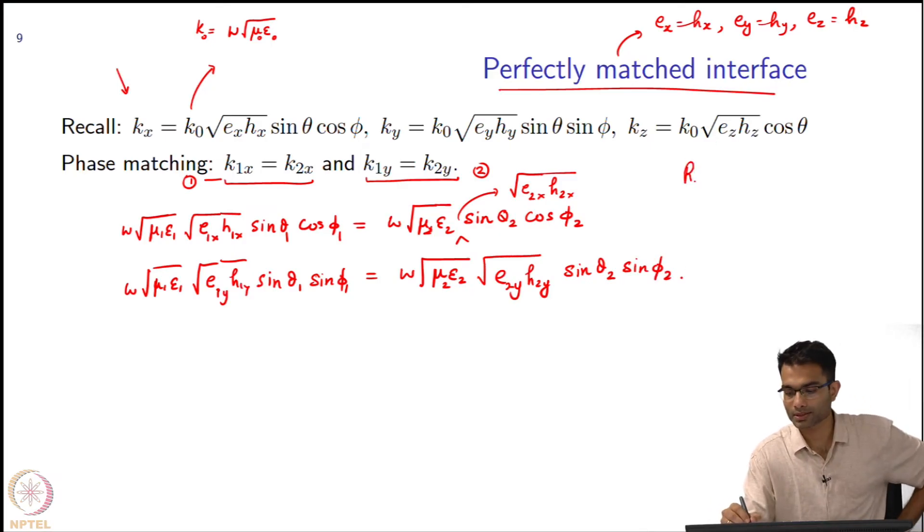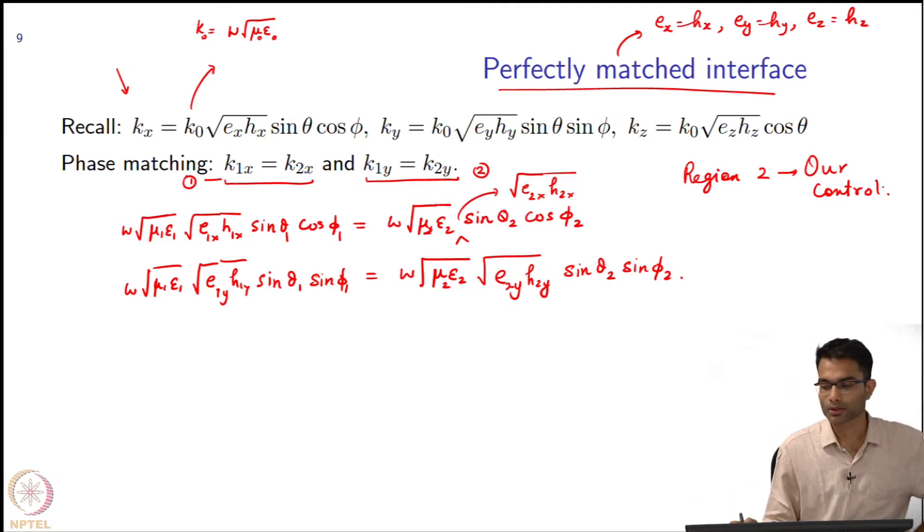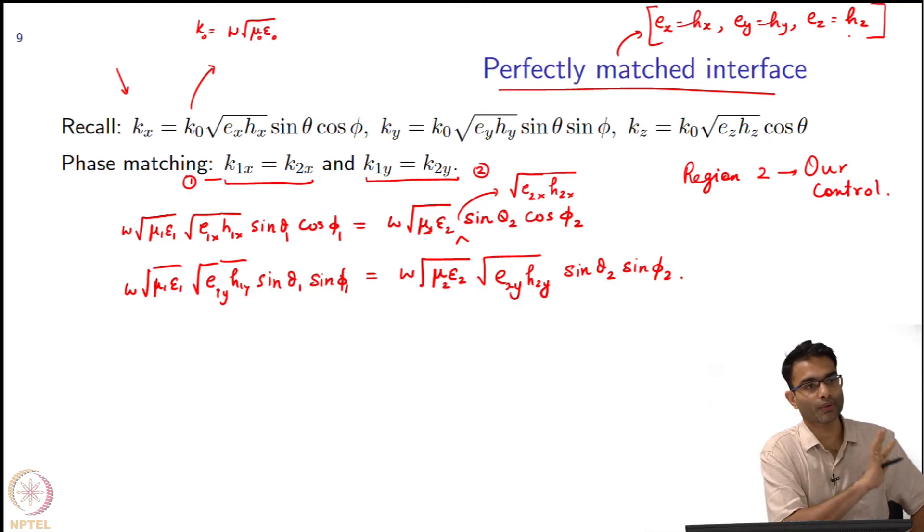And the main thing to remember is region 2 is under our control. Why is this thing called a perfectly matched interface? The reason is very literal. Perfectly matched meant these things - that is what we defined in a few slides ago. But perfectly matched interface - if you did not know anything about fancy PML and I told you interface is perfectly matched, what would you think? Impedances are matched.